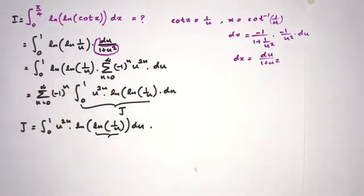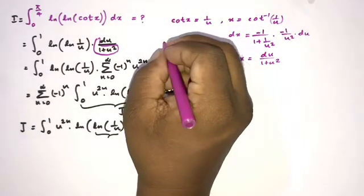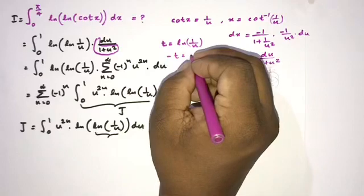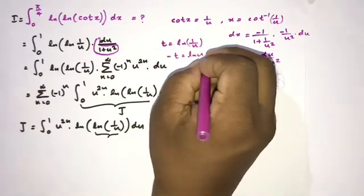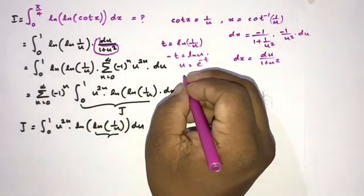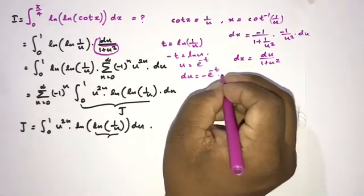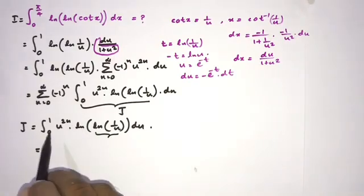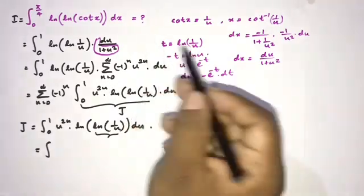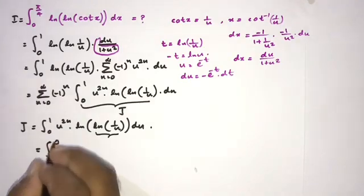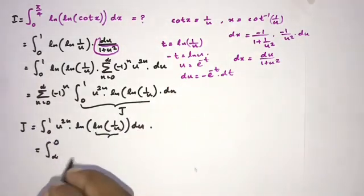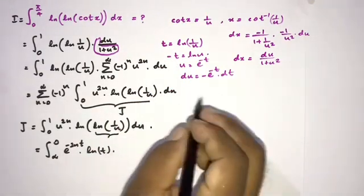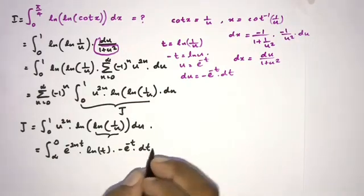To evaluate J, we take the substitution t = ln(1/u). Then u = e^(−t) and du = −e^(−t) dt. The limits transform: when u goes from 0 to 1, t goes from infinity to 0. Substituting, we get e^(−2nt) times ln(t) times (−e^(−t)) dt.